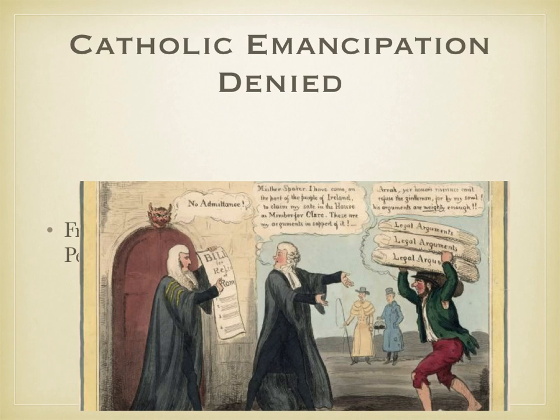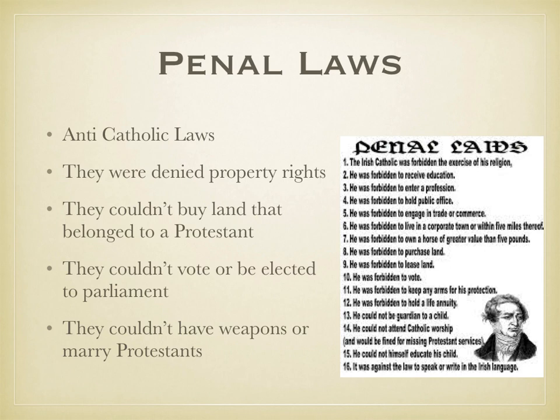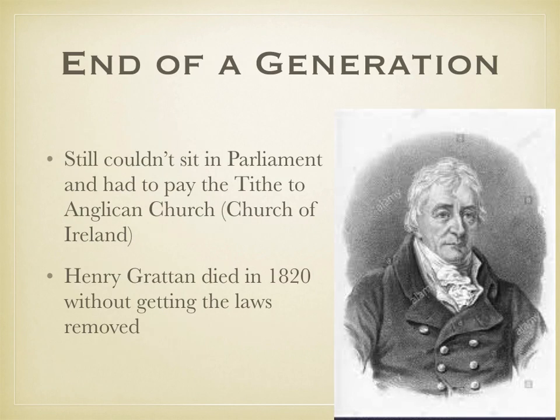Catholic emancipation basically meant freeing the Catholics of Ireland from the unfair penal laws. The penal laws were a series of discriminatory laws against Catholics and Presbyterians, and though many of these had been removed by this point, Catholics still didn't have the right to sit in Parliament and had to pay a tithe to the Church of England. Henry Grattan, who had done so much for Catholic emancipation before 1798, died in 1820 without getting these last discriminatory laws removed.